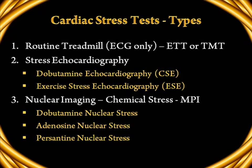The third type of stress testing for the heart is nuclear imaging, also called MPI — myocardial perfusion imaging. The MPI is calculated using a chemical stressor: either dobutamine, adenosine, or persantine is used to increase the workload of the heart, and the perfusion of the myocardium is assessed using a nuclear tracer — either technetium or thallium. Either stress thallium or stress technetium can be used with dobutamine, adenosine, or persantine.